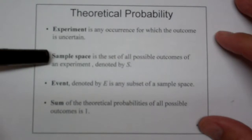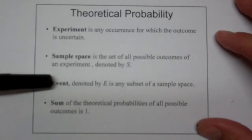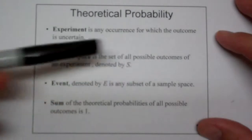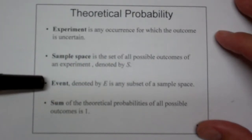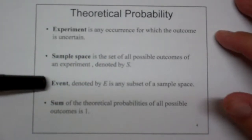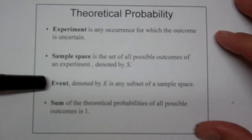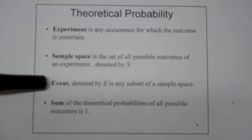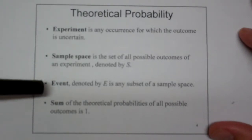So we run an experiment, that's any occurrence for which the outcome is uncertain. Roll the dice, pull a coin, roll the ball in the roulette wheel, all of those types of things. The sample space is the set of all possible outcomes from an experiment denoted by S. So this is what makes the theoretical possibility, theoretical probability partially possible. Is that we actually know what the sample space is. Six sides on a die, 52 cards in a deck, 38 slots on a roulette wheel, all of those kinds of things. An event denoted E is any subset of the sample space. So this is anything that we could define. An even number, a spade, a king, a red slot on a roulette wheel. Any of those things could be events.